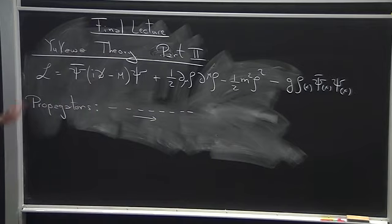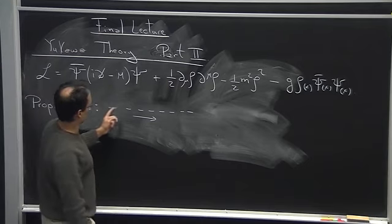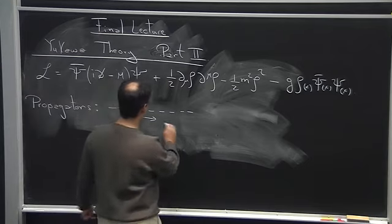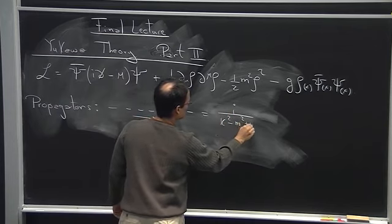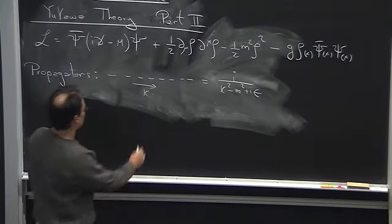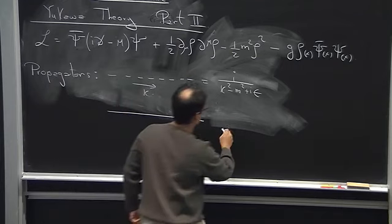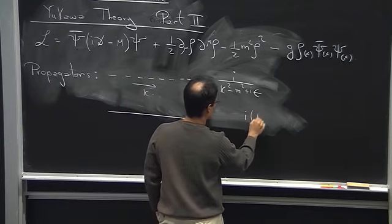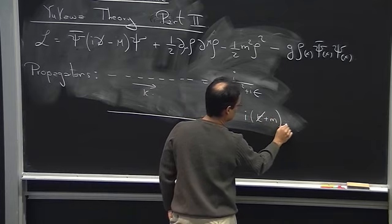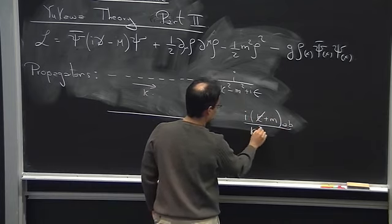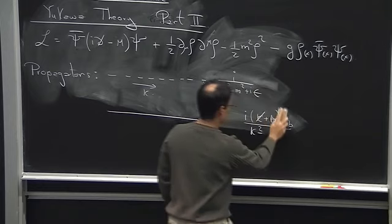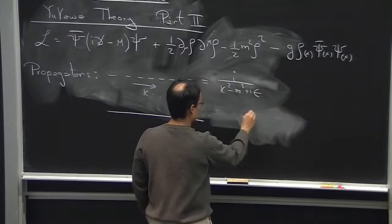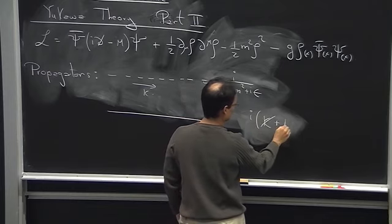Previously, when we had our pseudo-theory of nucleons where the nucleons were complex scalars, we denoted the real scalar propagator with a dashed line — it's just a standard Klein-Gordon propagator. Now we have a fancier object to describe our nucleons, and we have a propagator that looks like i(k-slash + M) with two indices a and b over k-squared, where M is the capital M.